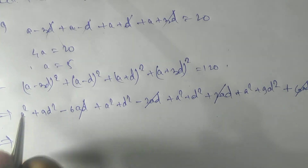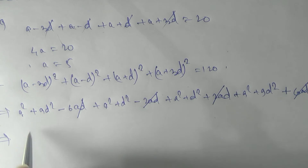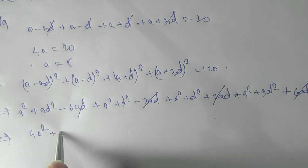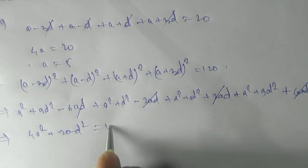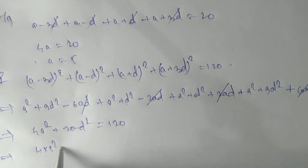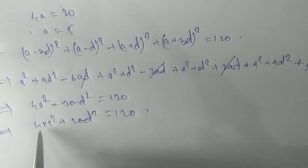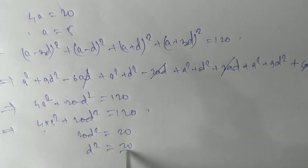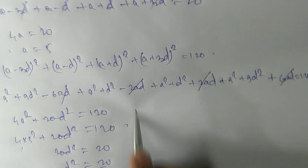After cancellation we get 4a² + 20d² = 120. Substituting a = 5: 4·25 + 20d² = 120, so 100 + 20d² = 120, giving 20d² = 20, so d² = 1 and d = ±1.